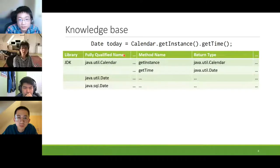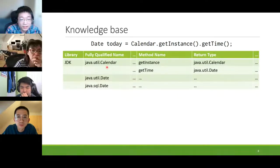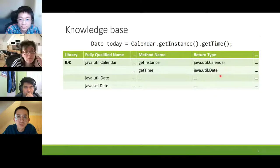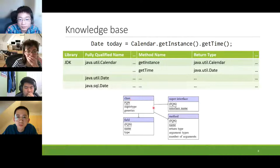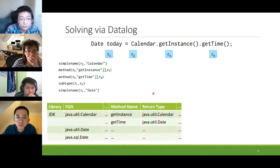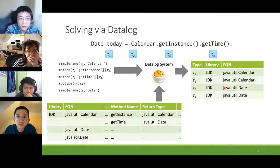To help solve for the type variables, we leverage a knowledge base built from popular Java libraries such as the JDK, Guava, and more. In the sample, we can see there is a Calendar class with methods getInstance and getTime, which returns Calendar and Date, and a couple of classes with simple name Date. These facts help us solve the constraints. The knowledge base stores methods, fields, and relation information. The constraints and facts from the knowledge base are fed to a Datalog system, which gives us a mapping from types in the AST to the fully qualified names satisfying those constraints.